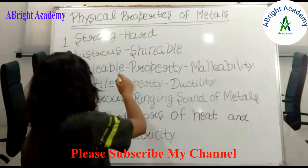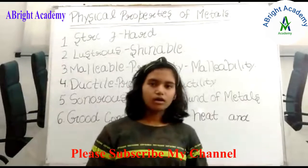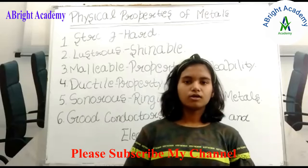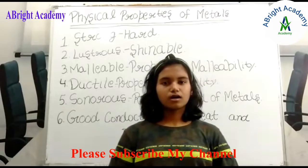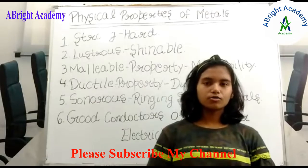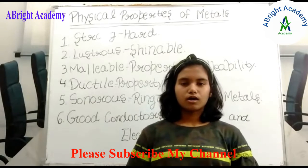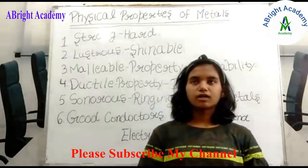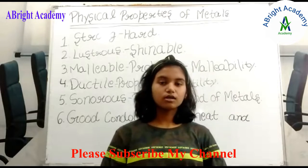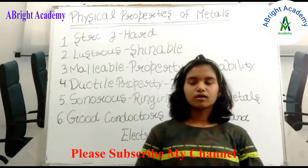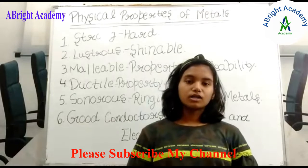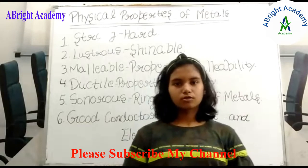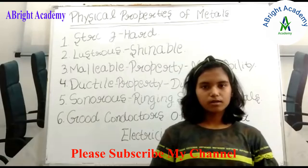Let us come to the third term which is malleable. This property is known as malleability, which is a characteristic property of metals. In this property, metals can be beaten into thin sheets by hammering them. For example, aluminum foil which is used to wrap our food items, and silver foil which is used to decorate sweets. So these are the examples of malleable metals.